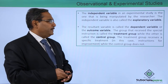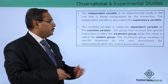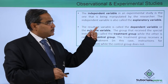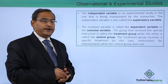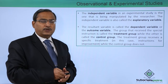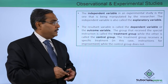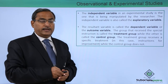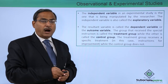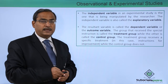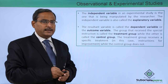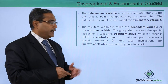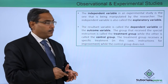The resultant variable is called the dependent variable or the outcome variable. In case of the explanatory variable, we can consider the study hours per day, and in case of the outcome variable, the respective student marks, grades, performances, and attendances — that is our outcome variable in this particular problem.